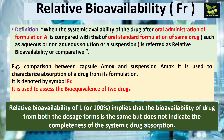Generally, relative bioavailability is used to assess the bioequivalence of two drugs. If the relative bioavailability FR is 1 or 100%, it means that the bioavailability of the drug for both dosage forms is the same. However, it does not mean that the dosage form has 100% systemic drug absorption.